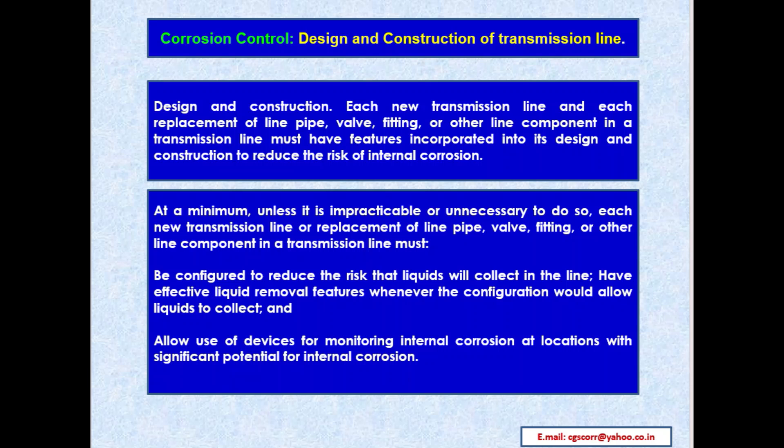Corrosion control: design and construction of transmission lines. Each new transmission line and each replacement of line pipe, valve, fitting, or other line component must have features incorporated into its design and construction to reduce the risk of internal corrosion. At a minimum, unless impracticable or unnecessary, each new or replacement transmission line component must be configured to reduce the risk that liquids will collect, have effective liquid removal features, and allow use of devices for monitoring internal corrosion at locations with significant potential for internal corrosion.